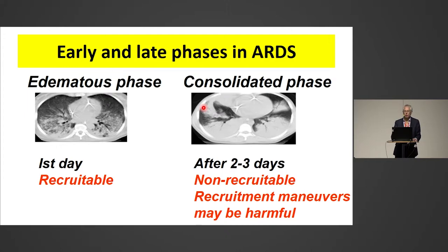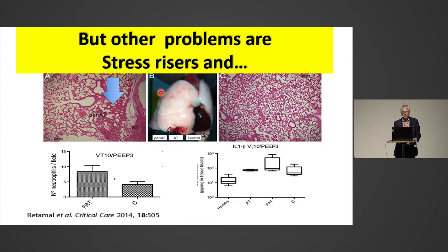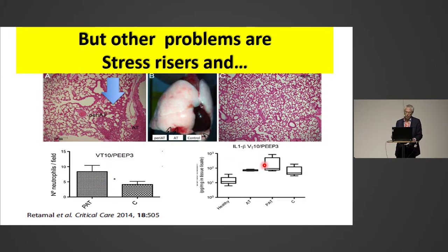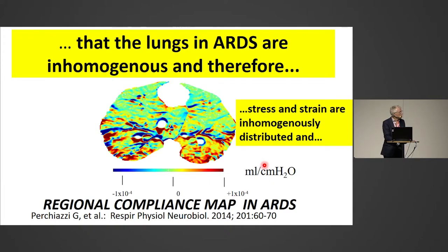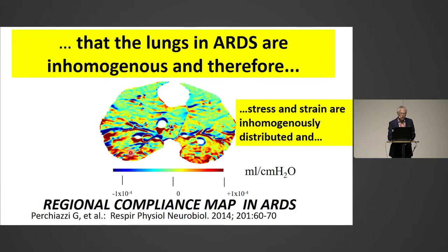We have other problems also in ARDS. This stress riser data comes from a study by one of our co-workers, who created an artificial atelectasis and then measured the inflammatory response at the interface or border between the open lung and the collapsed lung. They found higher neutrophil infiltrates and higher inflammatory cytokines in this region. Furthermore, the lungs are very inhomogeneous, and therefore stress and strain are inhomogeneously distributed. You can see here that blue is low compliance and red is high compliance — it's very inhomogeneously distributed in the lung, with high and low compliance regions almost adjacent to each other.